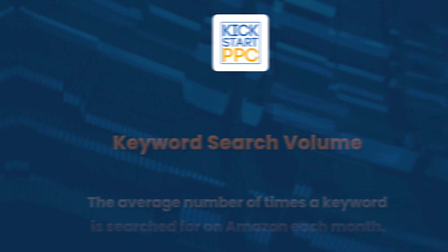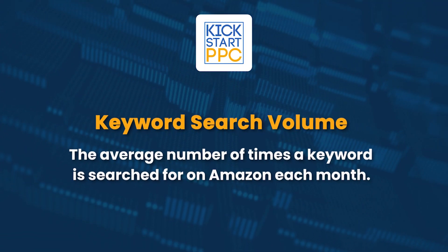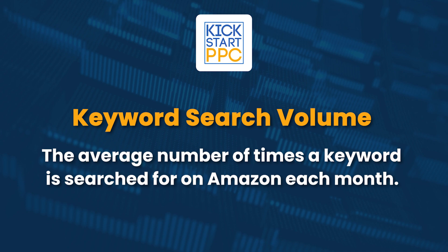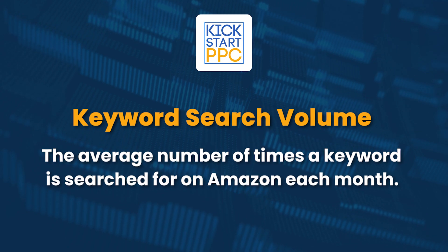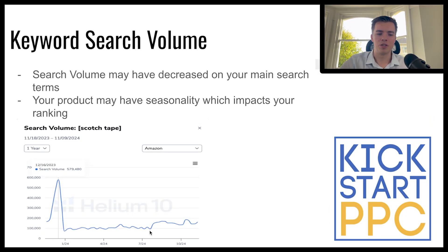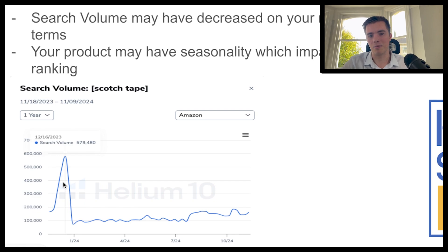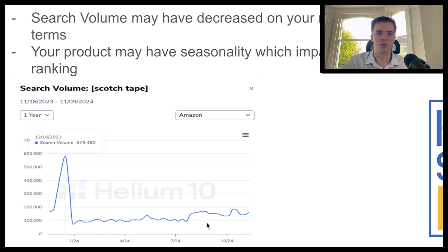Another reason your sales could be declining is down to search volume, and this is something we see quite a lot with seasonal products. You can see here — we've got a keyword which is scotch tape. Obviously people are buying it for the holidays, so that's when the search volume spikes.